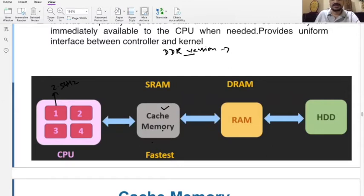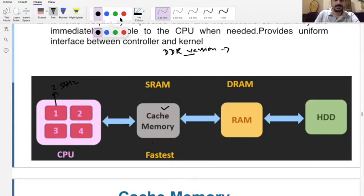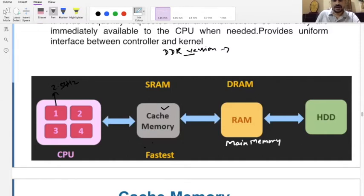The cache memory sits between your main memory and the CPU. The CPU is not directly connected to main memory — in between there is cache memory. This cache memory is called SRAM, which means Static RAM, while the main memory is called Dynamic RAM (DRAM).